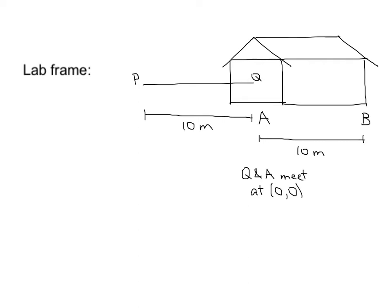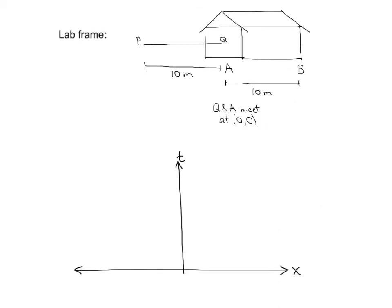Furthermore, we will define Q and A to meet at 0, 0, meaning space coordinate 0 and time coordinate 0. Now we are ready to draw the space-time diagram in the lab frame.